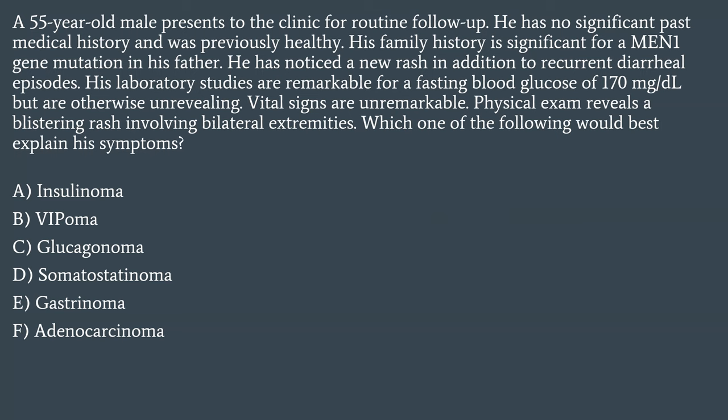Vital signs are unremarkable. Physical exam reveals a blistering rash involving bilateral extremities. Which of the following would best explain his symptoms? A, insulinoma; B, VIPoma; C, glucagonoma; D, somatostatinoma; E, gastrinoma; or F, adenocarcinoma.